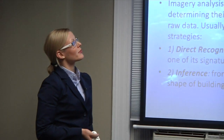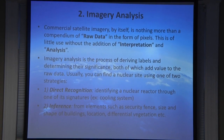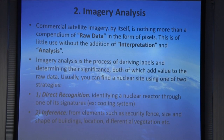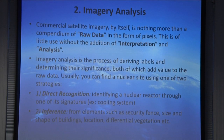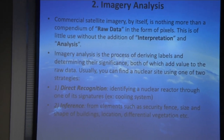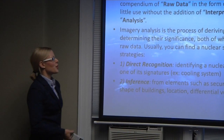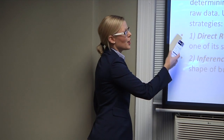On top of raw data, you have to add your interpretation — your analysis. Image analysis is the process of deriving labels and determining their significance and importance. How do you do that? Let's say we're looking for a new nuclear site — doing what we call a wide area search. You adopt at least one of two strategies: either try to recognize the site directly, or try to infer it from elements surrounding the site.